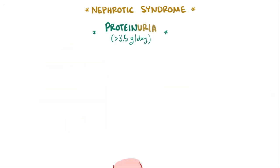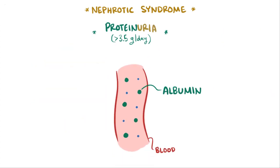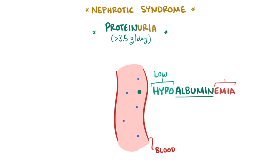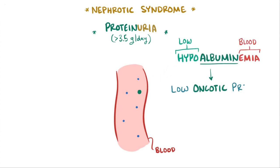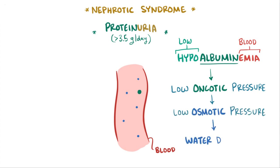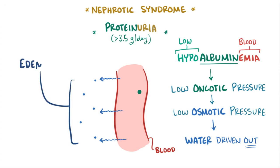An important protein in the blood is albumin, and so when it starts leaving the blood, people get hypoalbuminemia, low albumin in the blood. With less protein in the blood, the oncotic pressure falls, which lowers the overall osmotic pressure, which drives water out of the blood vessels and into the tissues, called edema.